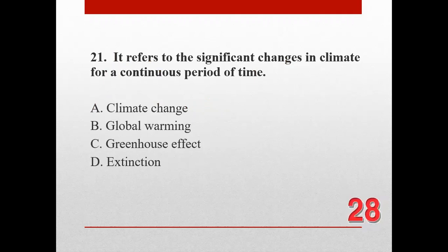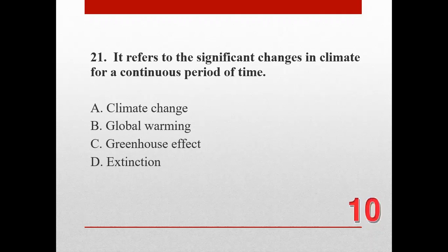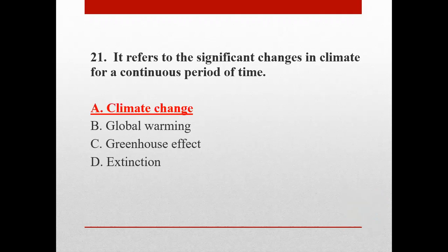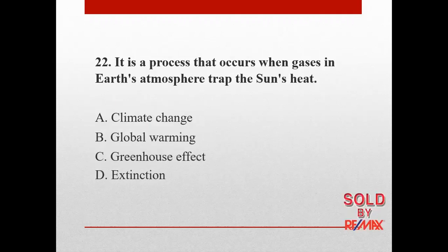Number twenty-one. It refers to the significant changes in climate for a continuous period of time. A. Climate change, B. Global warming, C. Greenhouse effect, and D. Extinction. The correct answer is A. Climate change.